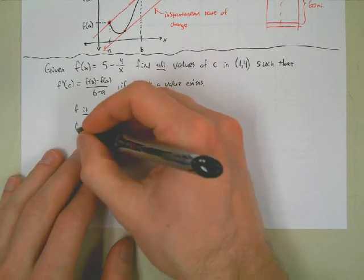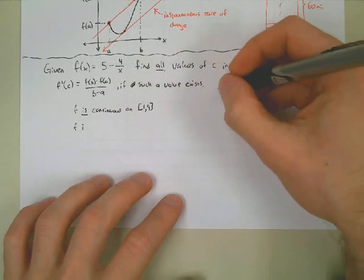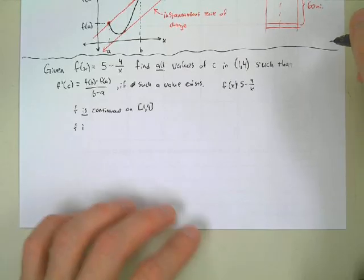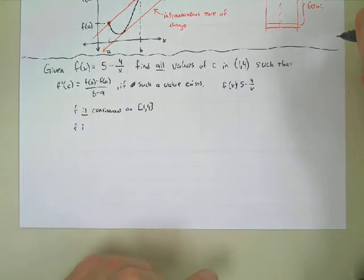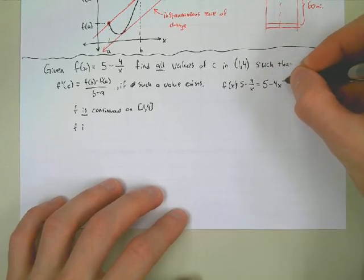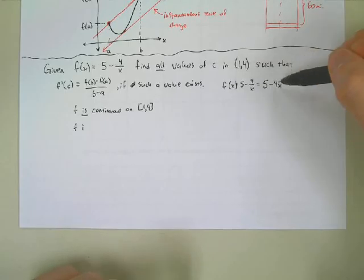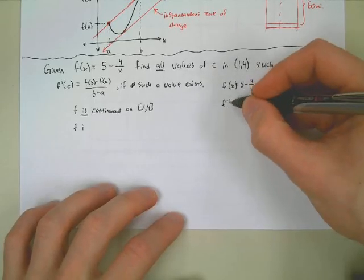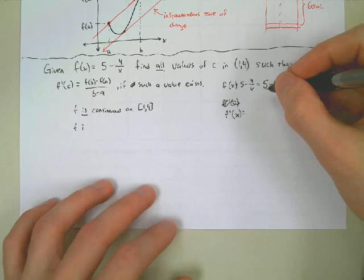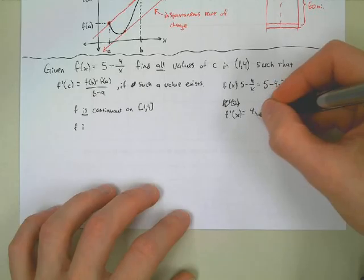Is F differentiable? We need to look at the derivative. F(x) = 5 minus 4 over x. Rather than use the quotient rule, rewrite it as 5 minus 4x to the negative 1. Then F prime of x equals 0 plus 4x to the negative 2, which is 4 over x squared. We have a problem at x = 0, but that's not in the interval [1, 4], so F is differentiable on the open interval (1, 4).